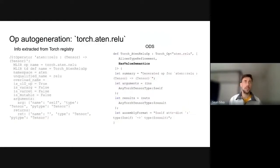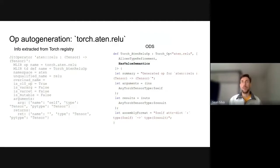Here's a quick example. We extract information from the Torch registry — shown on the left as our dump — and then convert that into ODS, which is a domain-specific language used to generate MLIR dialects. In this case, for example, we're able to infer that this op has value semantics.